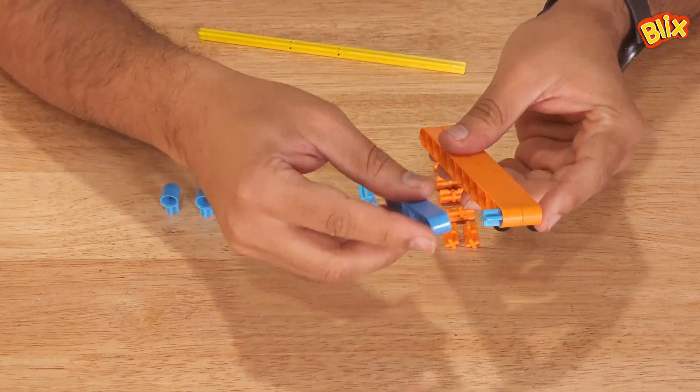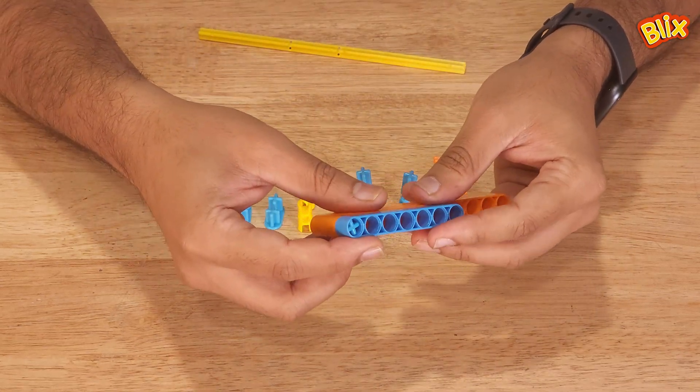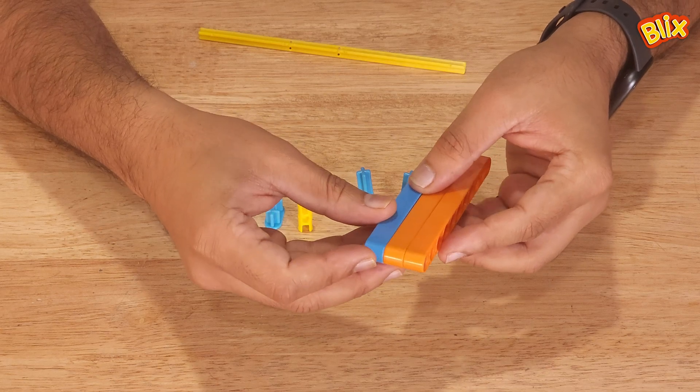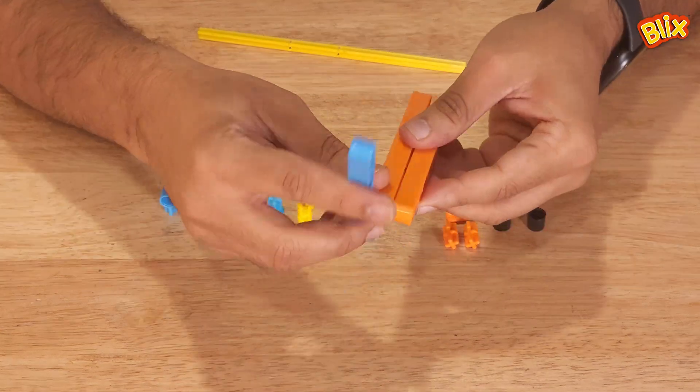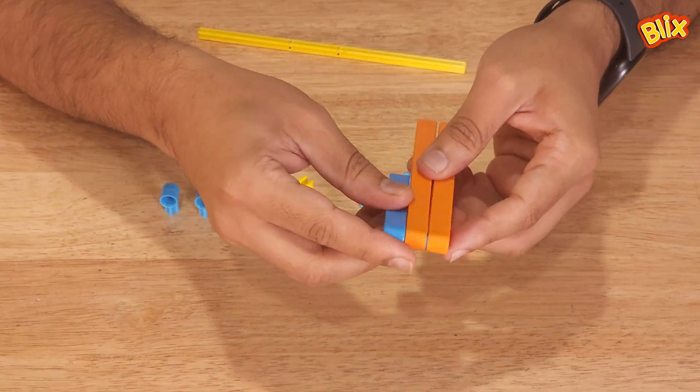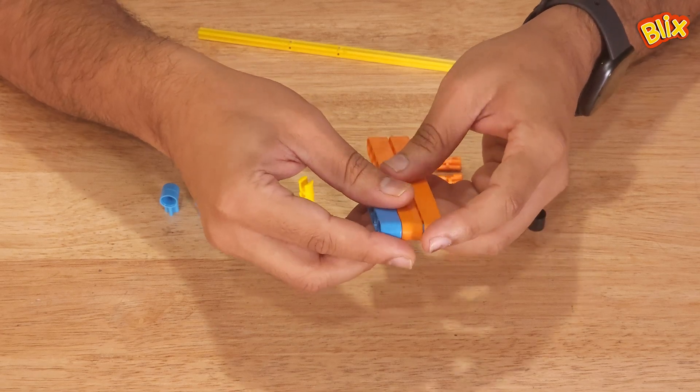As you can see, three pieces can be connected like this using a CT3. But again, they are free to move. To restrict this movement, we need to use two CT3s.